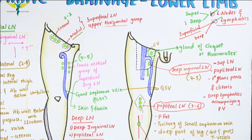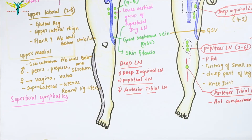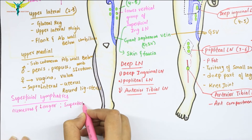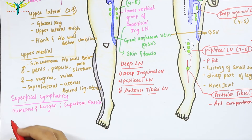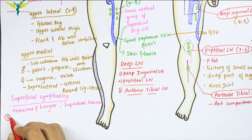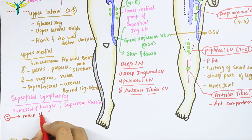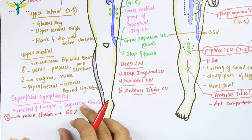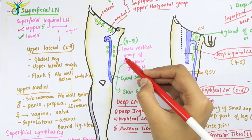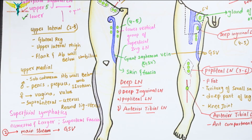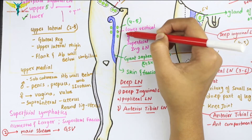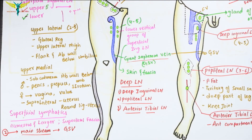Let's learn about the superficial lymphatics first. The superficial lymphatics are larger and more numerous than the deep lymphatics. They run in the superficial fascia, and they form two streams. The first stream, or main stream, follows the great saphenous vein and drains into the lower vertical group of the superficial inguinal lymph nodes.